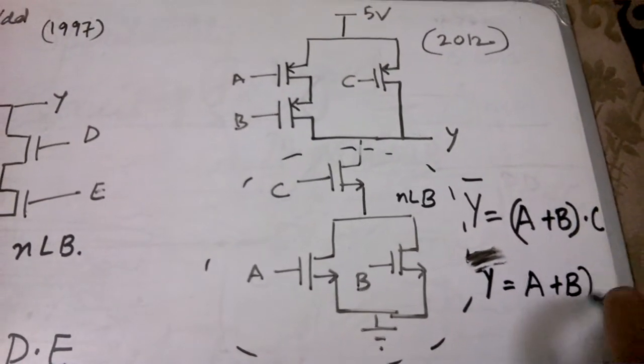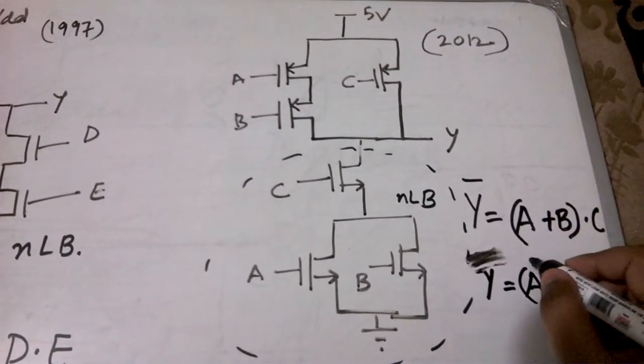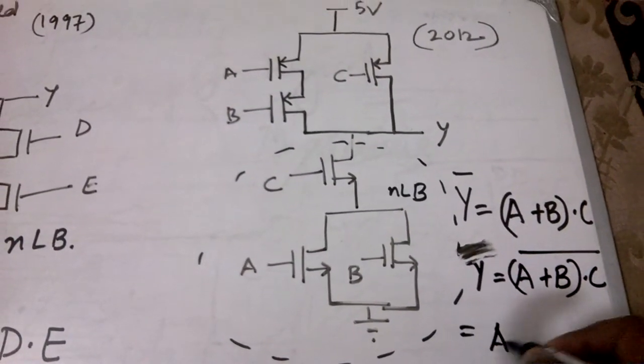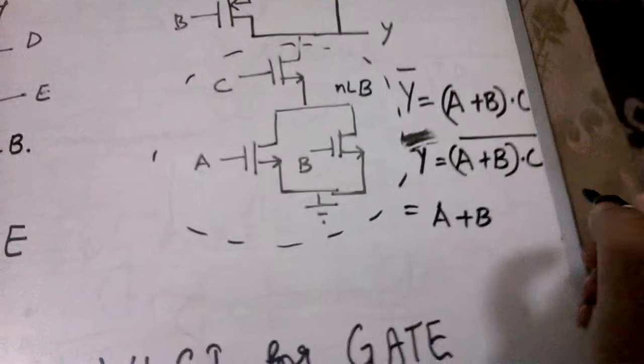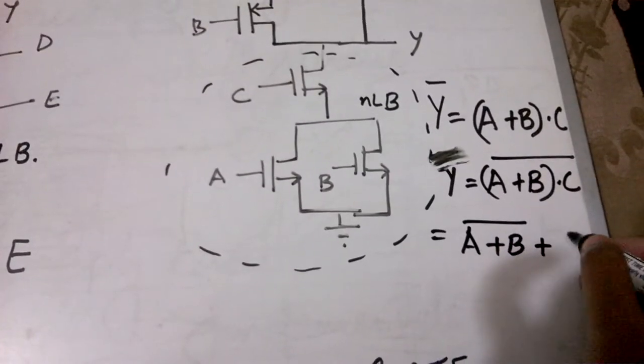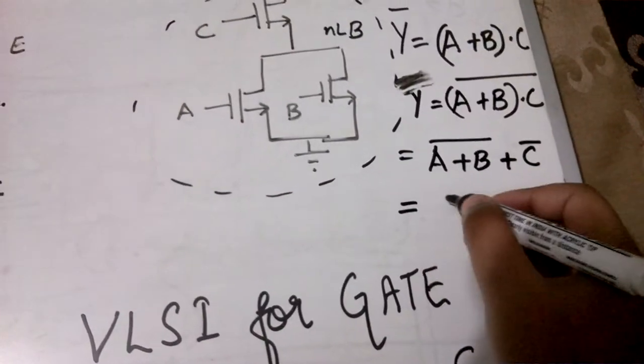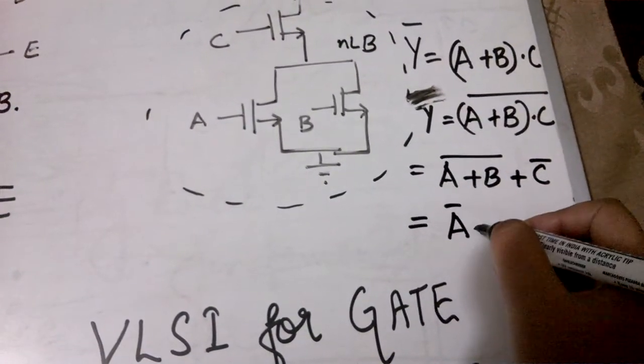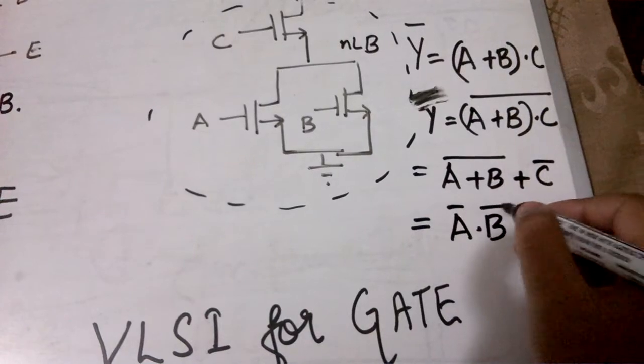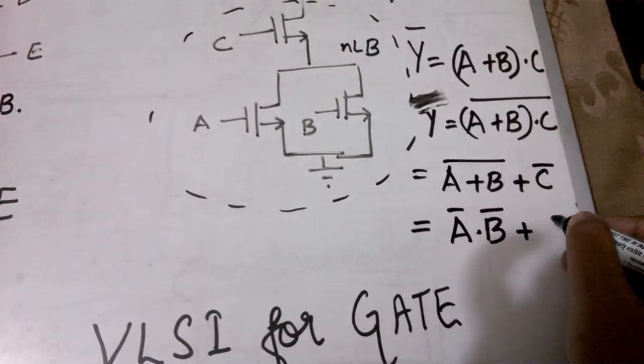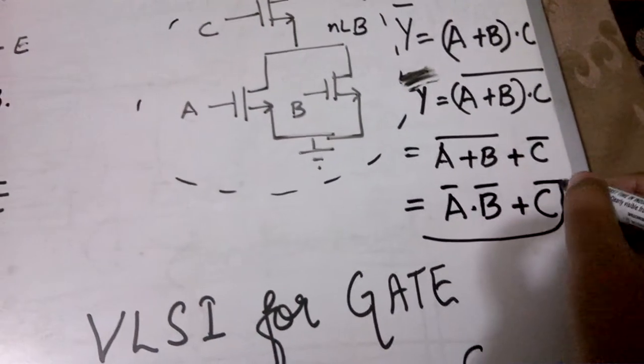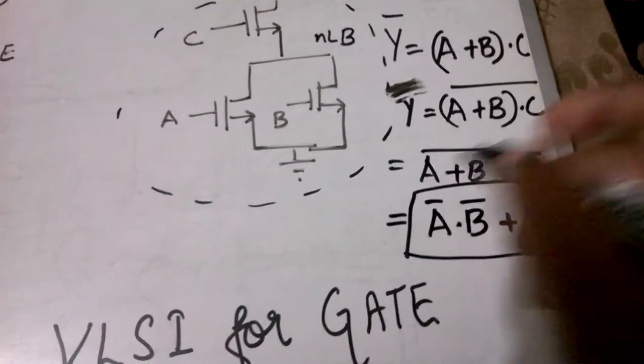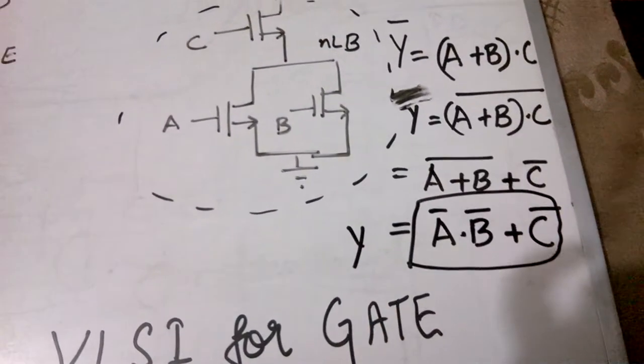Now this can be further solved. A plus B bar plus C bar, this will be equal to further by applying the De Morgan's laws, A bar dot B bar plus C bar. So this is the final expression for the given structure, for the expression for Y. Thank you.